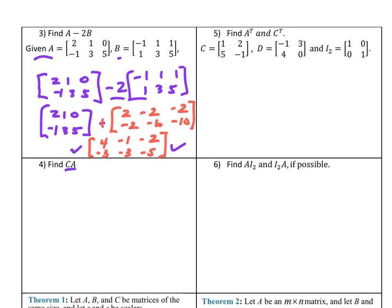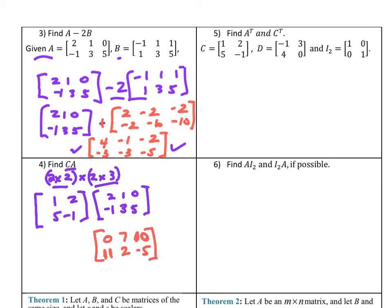Find CA—back to multiplication. Try this one. It works because C is 2×2 and A is 2×3. My result is 2×3. This is what I got. Check my arithmetic, make sure you can do it right too, going across and down with all these respectively.